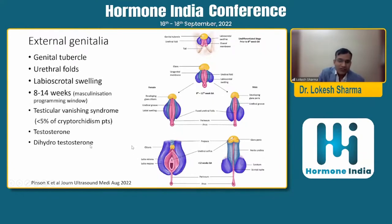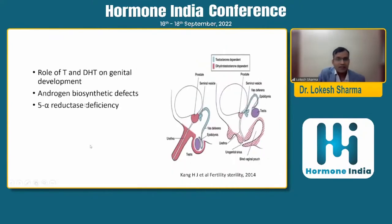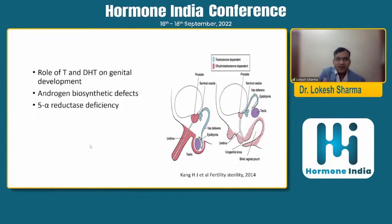Testosterone and dihydrotestosterone (DHT) are the main factors deciding the anatomy of the external genitalia. Testosterone is mainly responsible for the development of internal genitalia — epididymis, vas deferens, ejaculatory duct, and seminal vesicle — and descent of the testes to the scrotum. DHT is mainly responsible for fusion of the labioscrotal folds, development of the penis, and prostate. When 5-alpha-reductase deficiency is present, DHT deficiency mainly affects external genitalia. When androgen biosynthetic defects exist, both internal and external genitalia are affected.